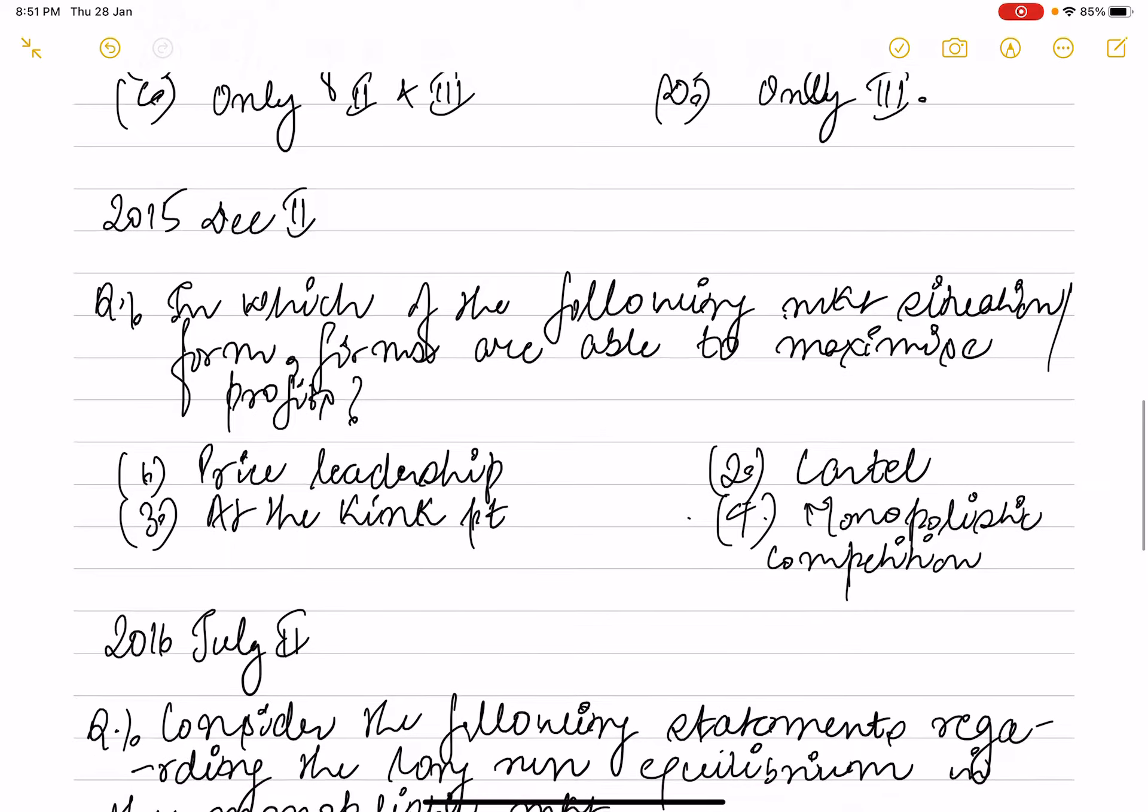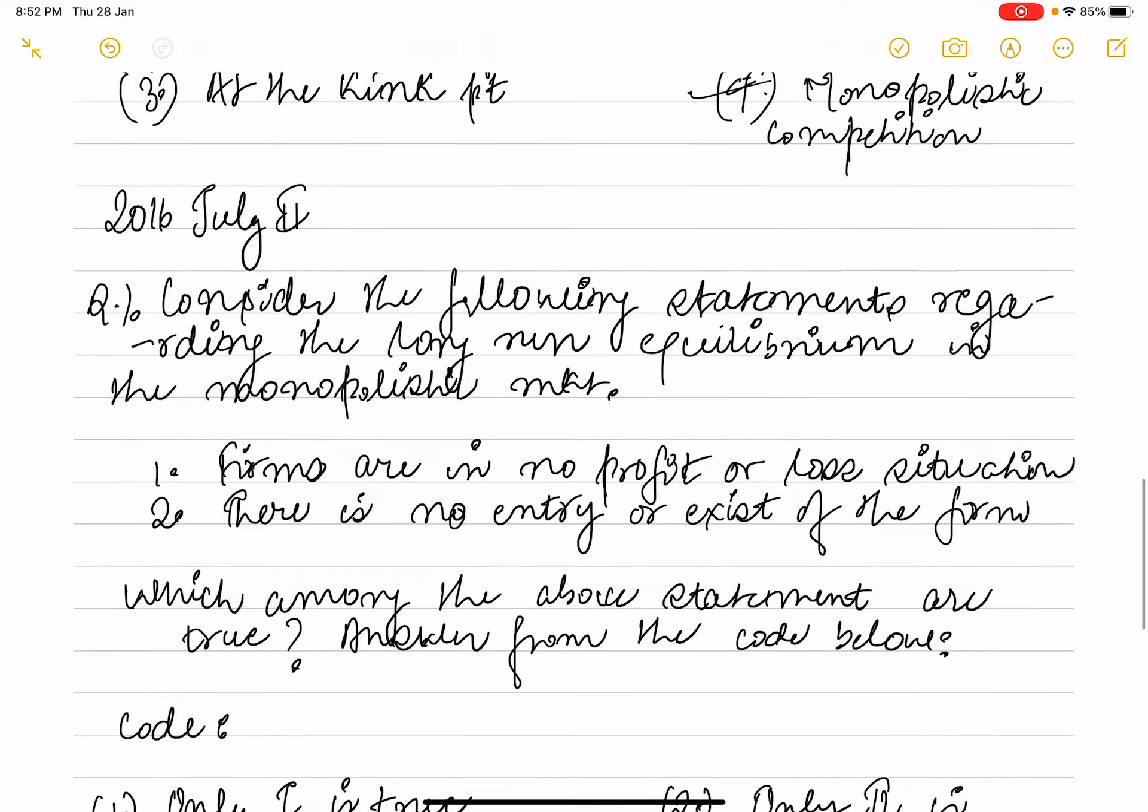Next question. This was asked in 2015 December paper two. The question is: in which of the following market situations are firms able to maximize profit? Is it price leadership, cartel, kinked demand, or monopolistic competition? In which market structure do firms maximize profit? So accordingly the fourth option, monopolistic competition, is the correct option.